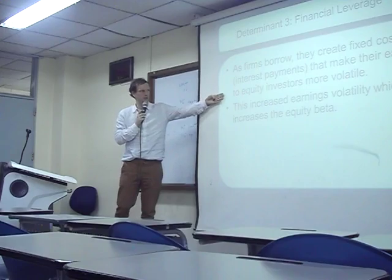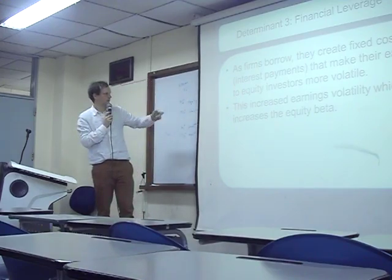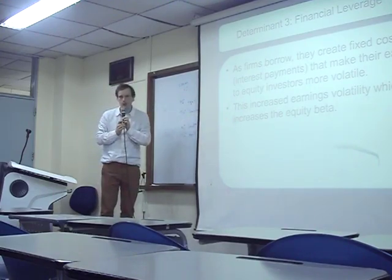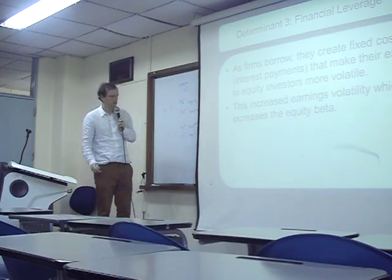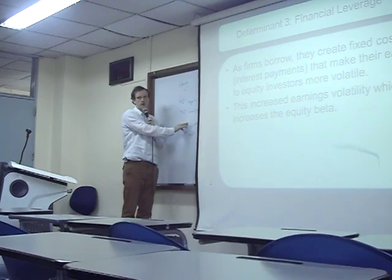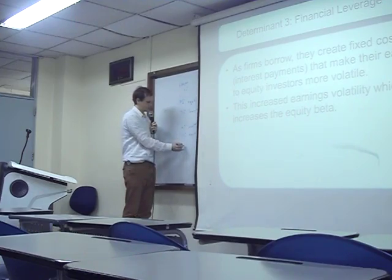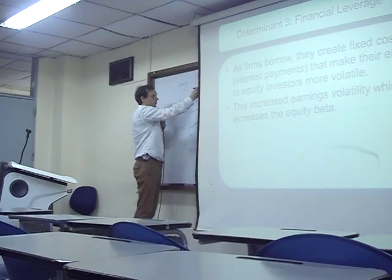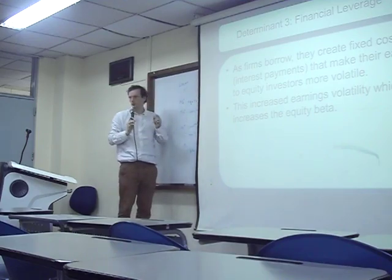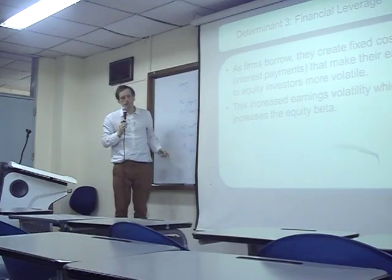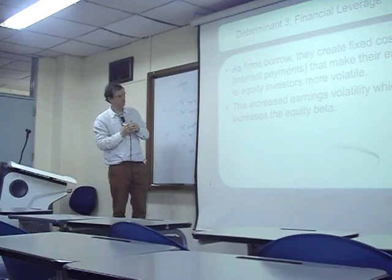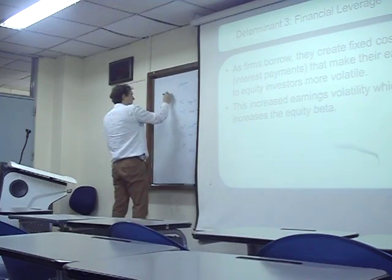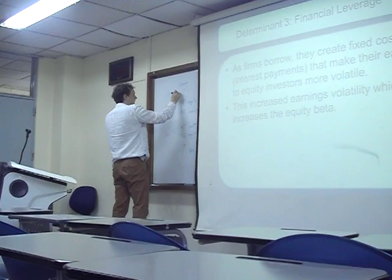So Restaurant A has a higher fixed cost, which makes earnings more volatile. Volatile means earnings can change more easily. This is increased earnings volatility, which increases the equity beta — it's just like having higher operating fixed costs. If we have a bad year and make zero profit, Restaurant B is at minus $500, while Restaurant A is at minus $4,500. So Restaurant A is more volatile. This is called high leverage, and Restaurant B is low leverage.